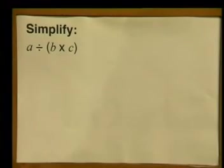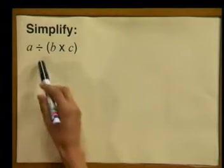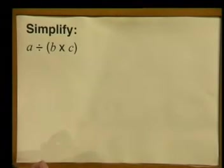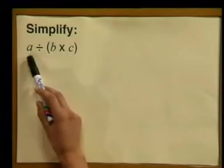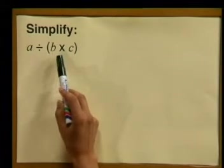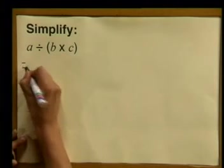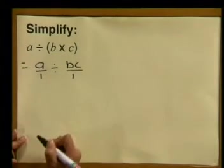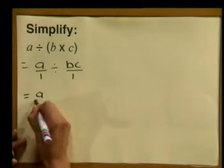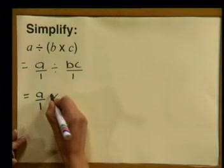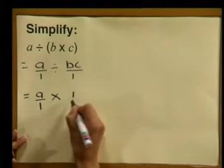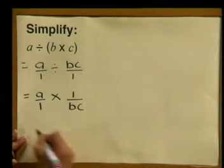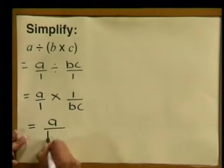So you see, for algebraic fractions, we use the same principle. Now have a look at this one. Simplify A divided by B multiplied by C. It is different from the last example, as these brackets tell us to divide A by the product of B and C. So we can write this as A divided by 1, divided by BC divided by 1. When we work this out, we write A divided by 1, then multiply and flip it around to write 1 divided by BC. And when we simplify this, we get A divided by BC.